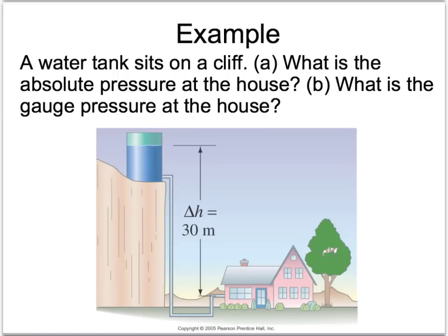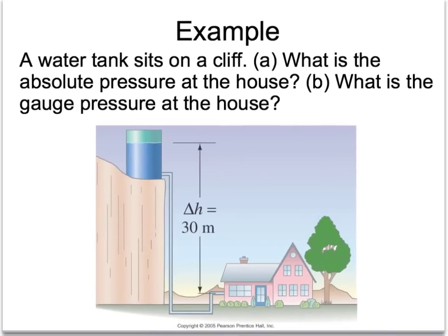Let's look at an example of how we might use the formula for absolute pressure. In this example, we're going to have a water tank up on a cliff — this is actually how the system for delivering water to your house works; we have water towers. We're going to find the absolute pressure of the water that enters the house right here, 30 meters below the water tank. We're also going to find out what a little pressure gauge placed there would read, similar to what you'd stick on your car tires.